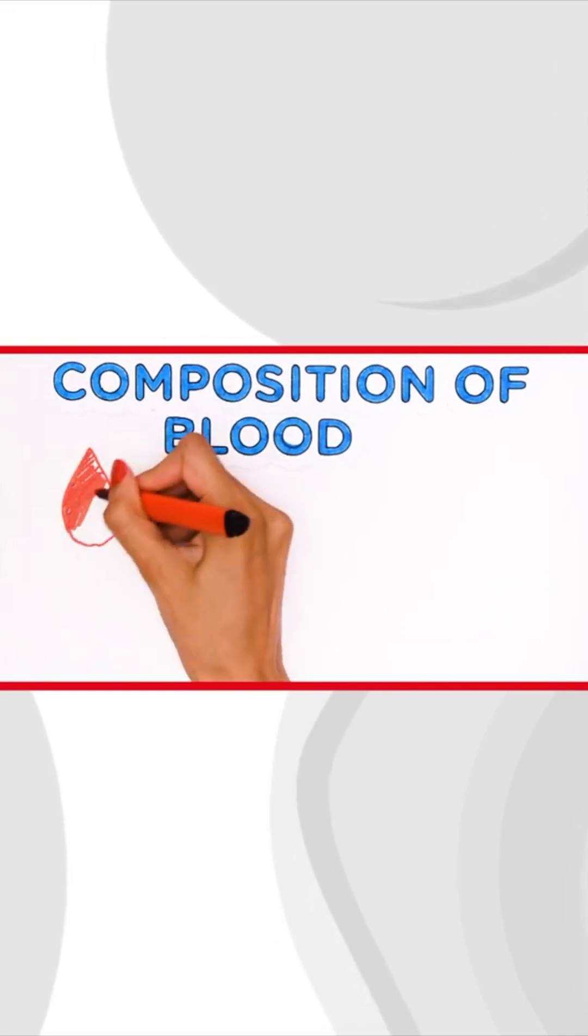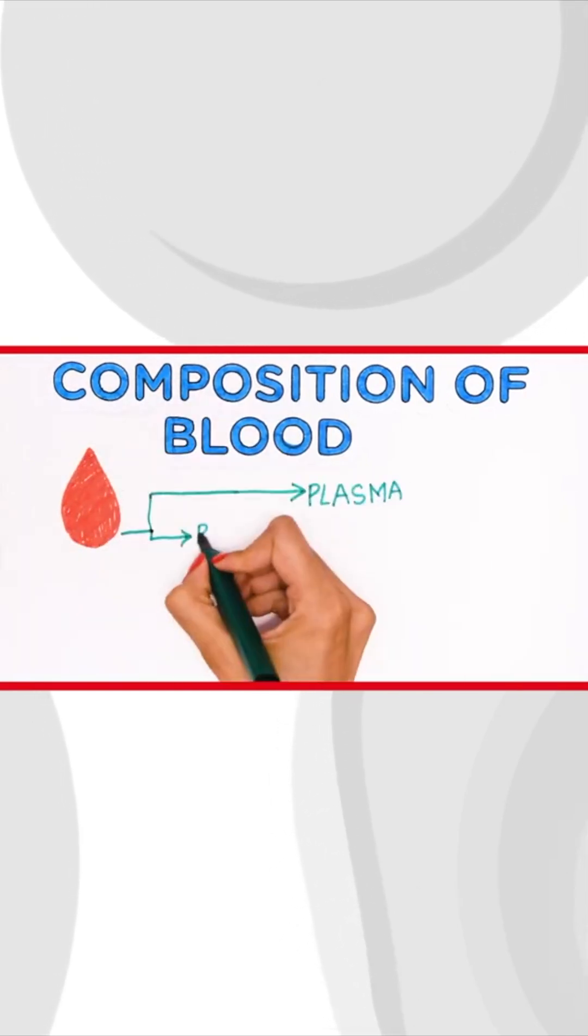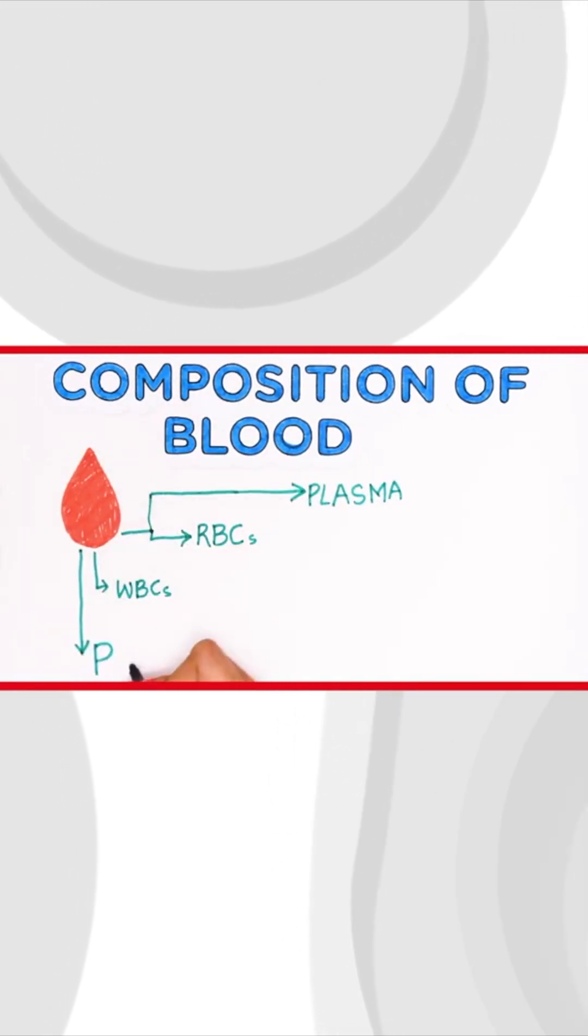Your blood is made up of four main components: plasma, red blood cells, white blood cells, and platelets.